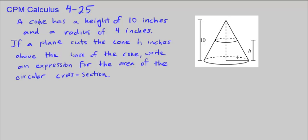Here we're given a picture of it, but a cone has a height of 10 inches, so we see the height is 10 inches here, and a radius of 4 inches, so the radius here is 4 inches. If a plane cuts the cone 8 inches above the base of the cone,